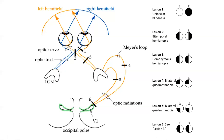If you have a lesion back closer to the primary visual cortex, then you're going to see another situation like lesion three — you're going to have homonymous hemianopia. It will depend on and be opposite to the side that is affected. So if the lesion is on the right, you're going to have the anopia on the left, and if the lesion is on the left, you'll have it on the right.